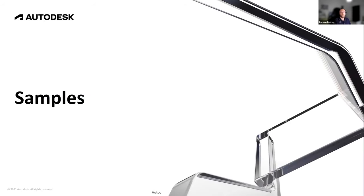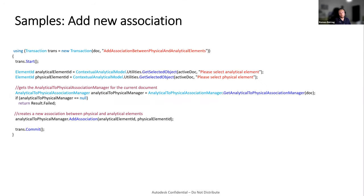Now let's see some code samples with this new API. Here's an example of creating an association between a physical and an analytical element. We select an analytical element and a physical element — supporting one-to-one association for now, with many-to-many planned for the future. We obtain the AnalyticalToPhysicalAssociationManager for the document, then call AddAssociation for the analytical and physical element IDs. It's pretty simple.